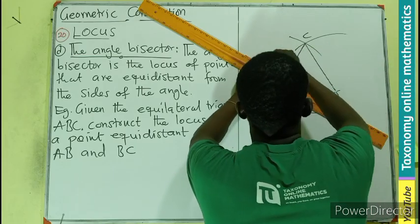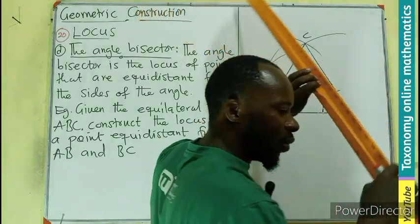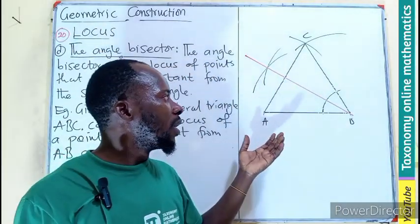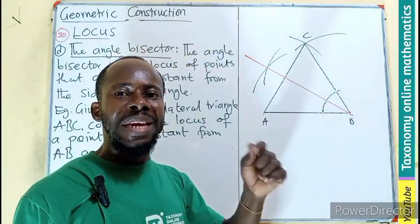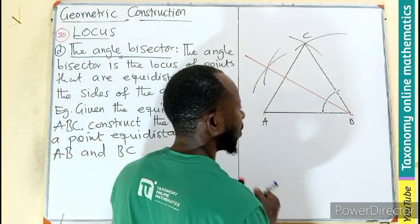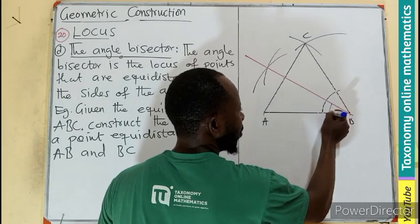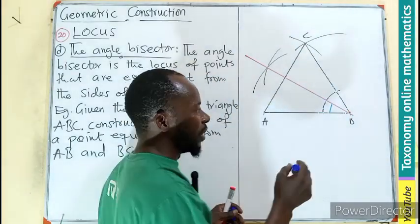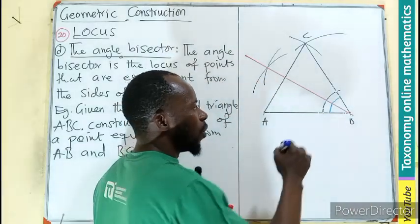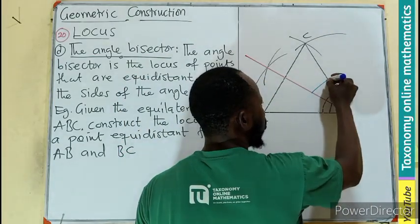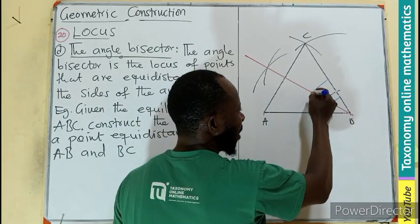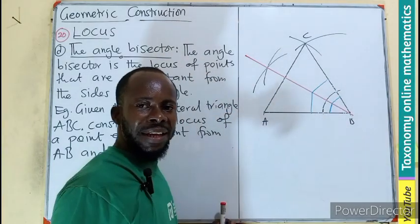then we have done what we call the angle bisector or a locus which is equidistant. So it means that when you measure from here, this dimension, the length of it will be the same when you measure to that piece. When you measure from this point to the line BC,